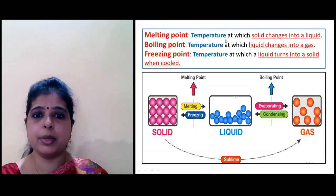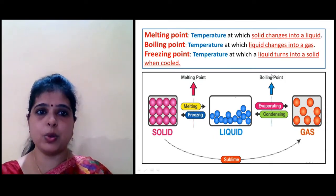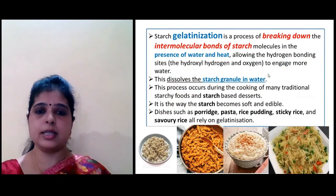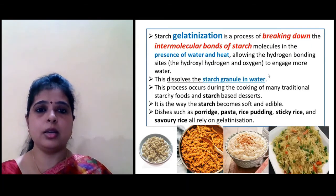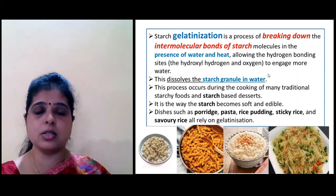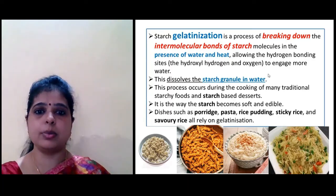Melting point is the temperature at which solid changes into liquid. The temperature at which liquid changes into gas is the boiling point. Freezing point is the temperature at which liquid turns into a solid when cooled. Gelatinization is the process of breaking down the intermolecular bonds of starch molecules in the presence of water and heat, which allows hydrogen bonding sites to engage more water, dissolving starch granules. This occurs during cooking of many traditional starchy foods and starch-based desserts — it is the way starch becomes soft and edible.